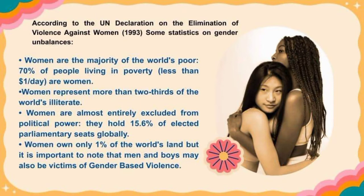According to the UN Declaration on the Elimination of Violence Against Women in 1993, some statistics on gender imbalances: 70% of people living in poverty less than $1 per day are women. Women represent more than two-thirds of the world's illiterate. Women hold only 15.6% of elected parliamentary seats globally. Women own only 1% of the world's lands. But it is important to note that men and boys may also be victims of gender-based violence.